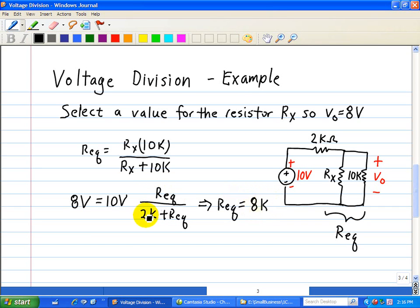You can see this 8 kilo ohms divided by 10 kilo ohms is 4 fifths. 4 fifths times 10 is 40 over 5 or 8 volts. So that's our answer for our equivalent which is 8 kilo ohms. Now, we use this answer to find Rx which is equal to 8 kilo ohms. And that turns out to be, doing some algebra, that Rx is equal to 40 kilo ohms.